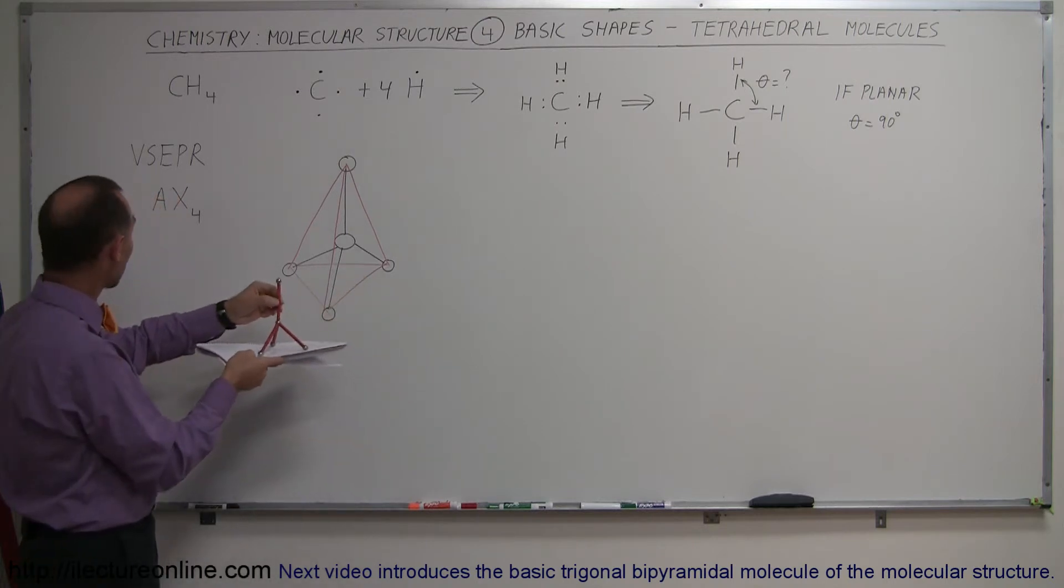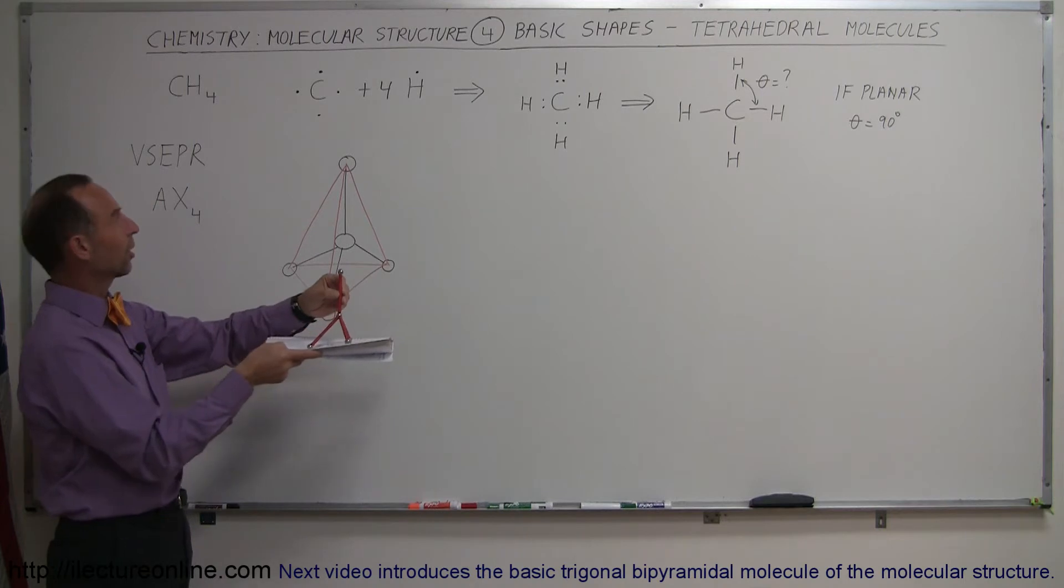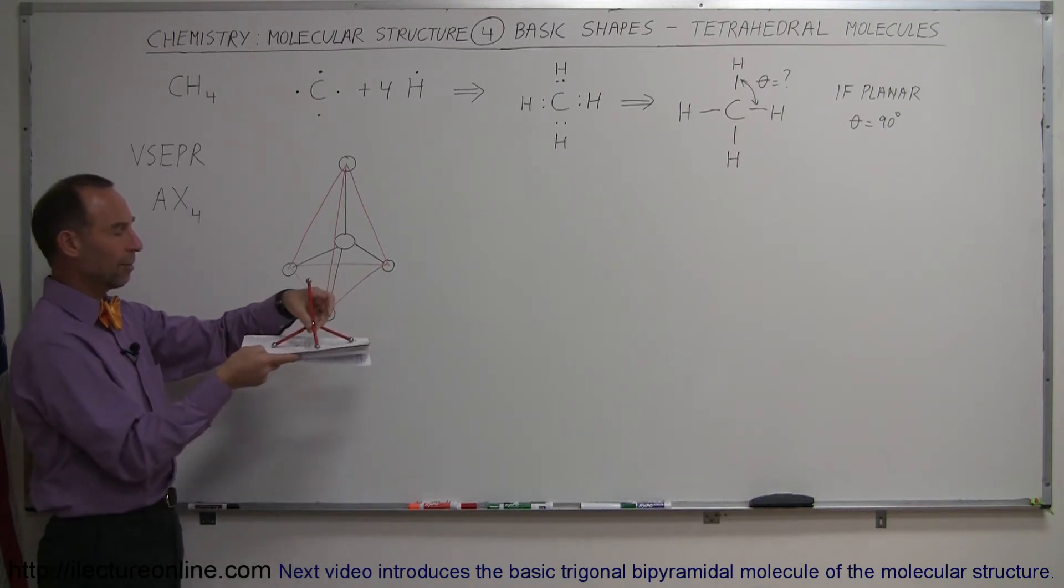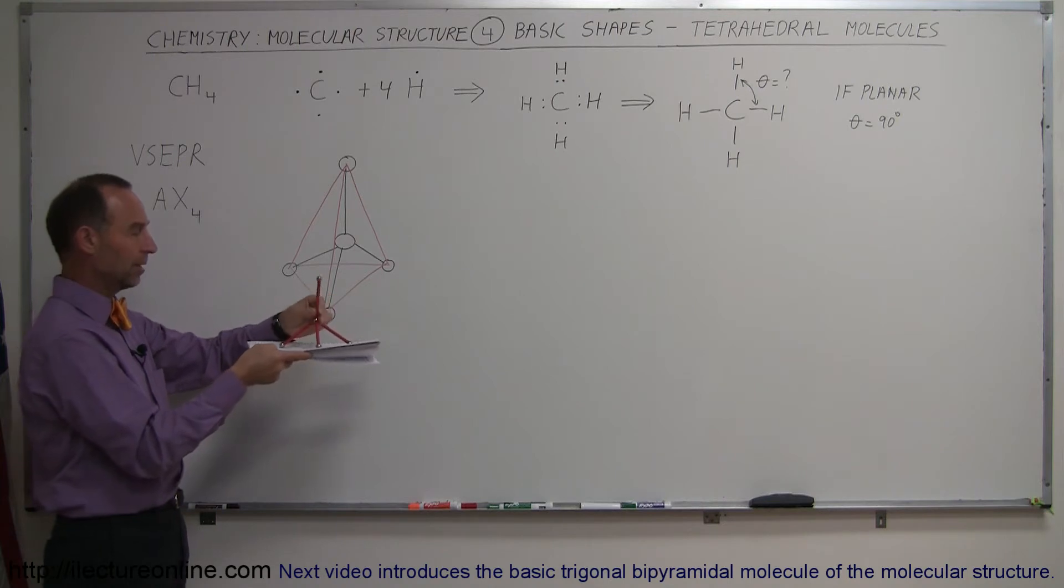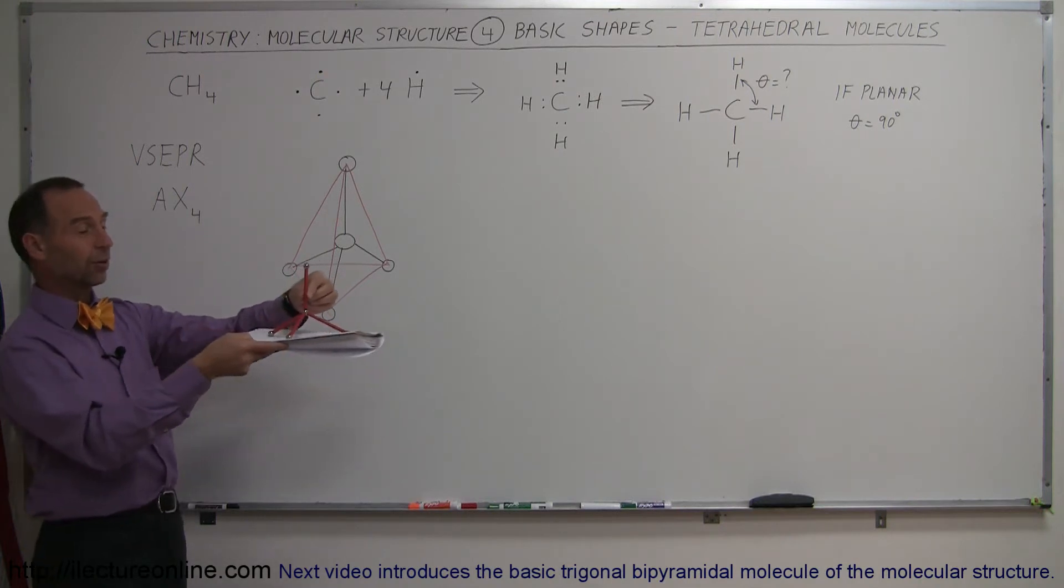This would be a good example of CH4, which is of course the methane molecule: one carbon at the center, four hydrogens. They all form a nice bond with two electrons in each bond, and notice that those electrons would like to be as far away from one another as possible, so this is the shape that they're going to end up with.